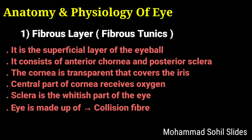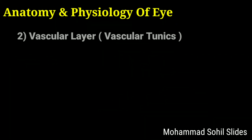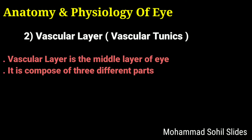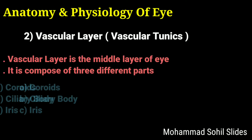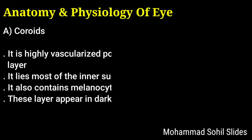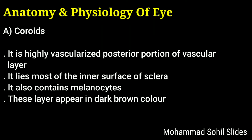The second layer is the vascular layer or vascular tunics. It is the middle layer of the eye or eyeball and is composed of three different parts: first, the choroid; second, the ciliary body; and third, the iris. The choroid is the highly vascularized posterior portion of the vascular layer, lying mostly on the inner surface of the sclera.